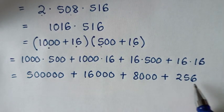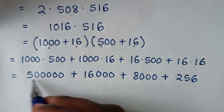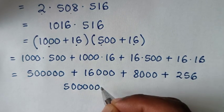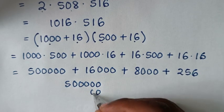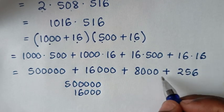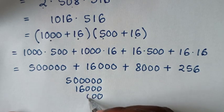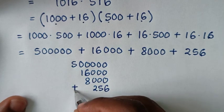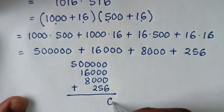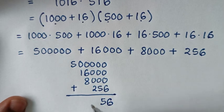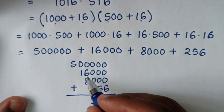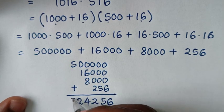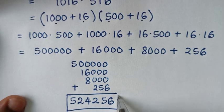Then here we will find the sum using the long method. So it will be 500,000, plus 16,000, plus 8,000, plus 256. So the sum here: it will be 6, here it will be 5, here it will be 2, 6 plus 8 is 14, carry 1, 1 plus 1 is 2, then 5. So this is our final answer: 524,256.